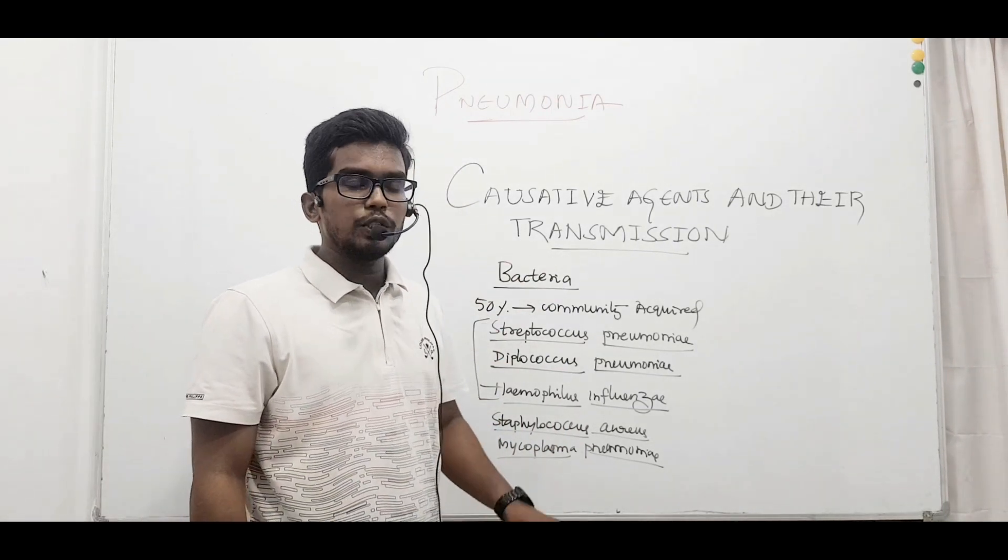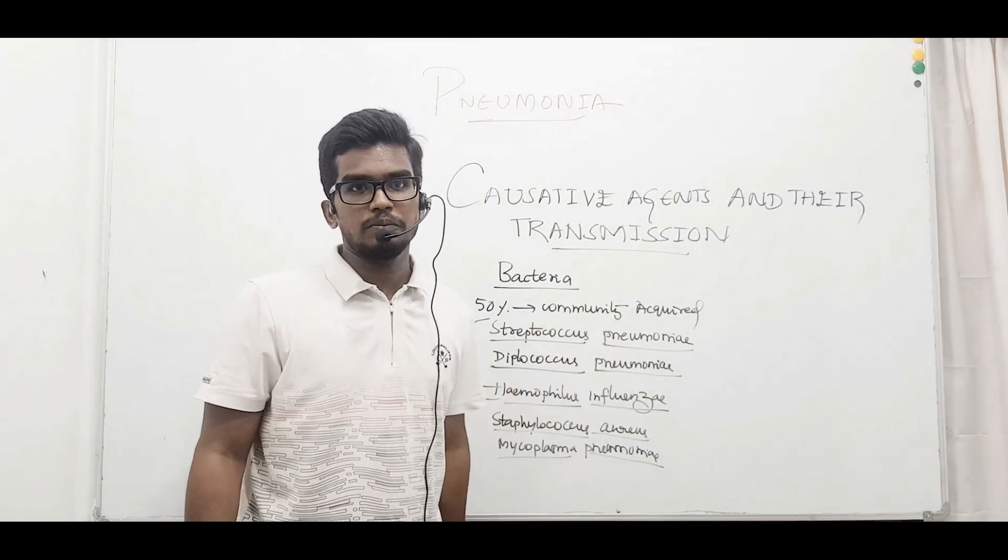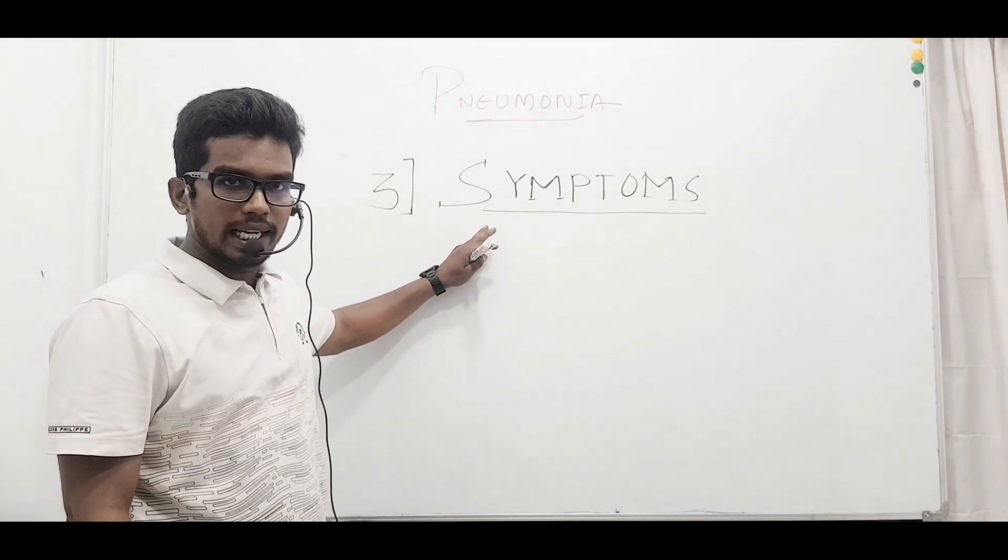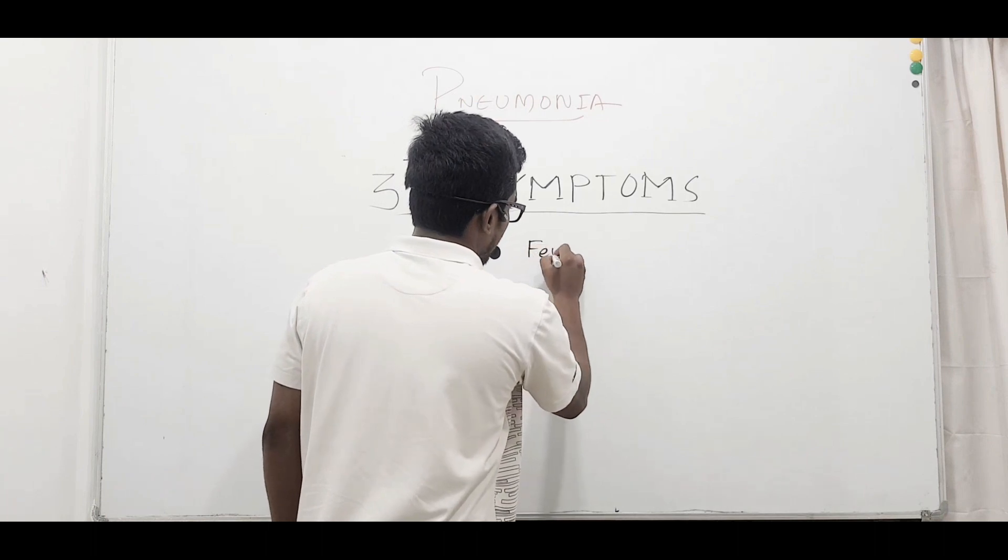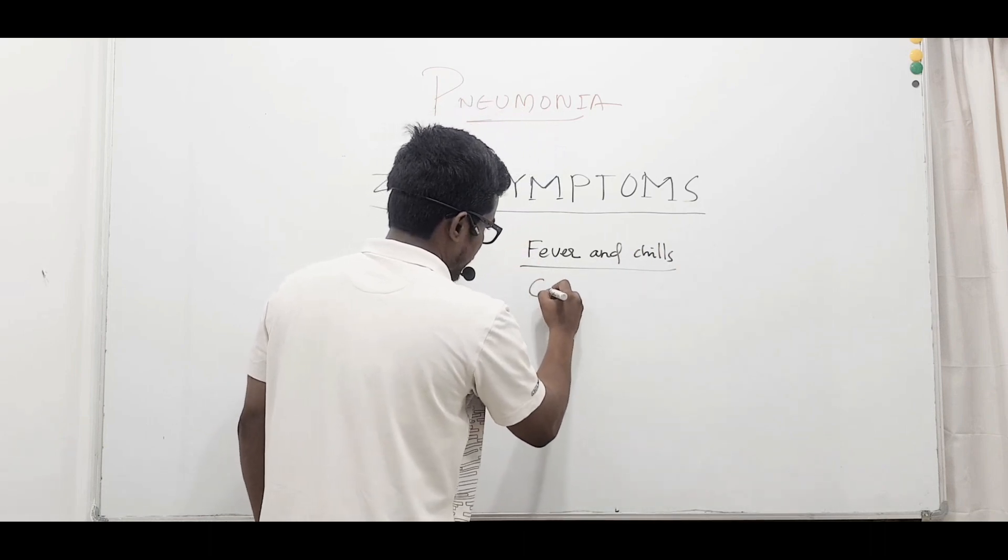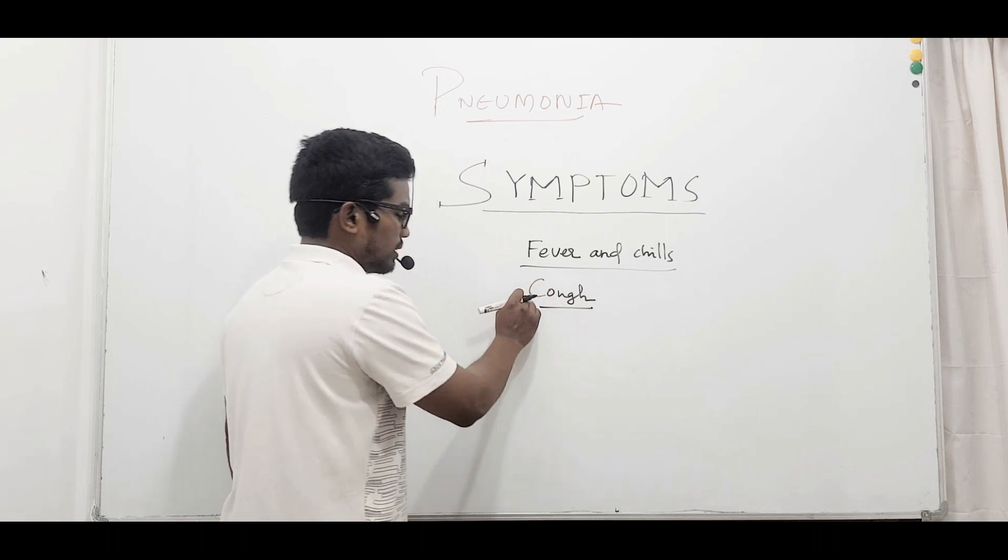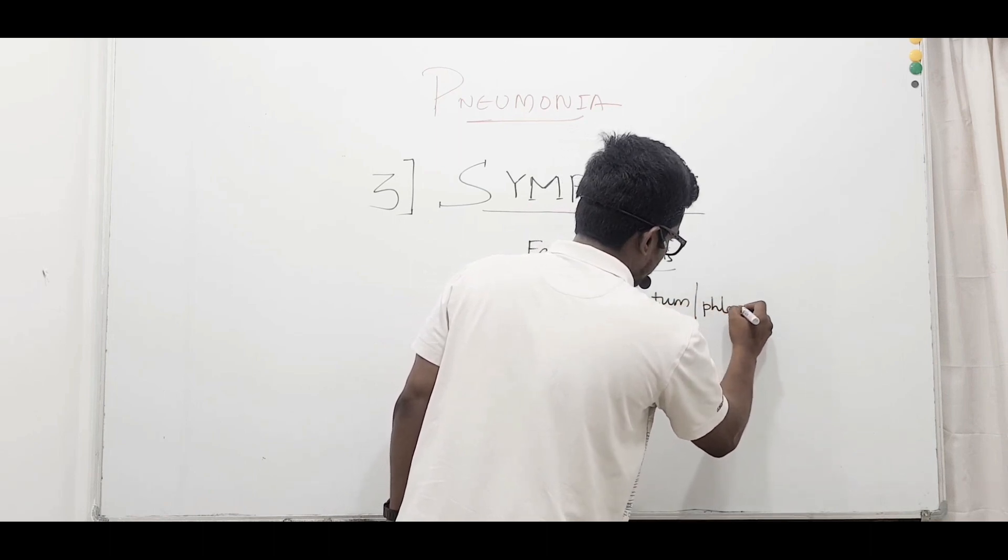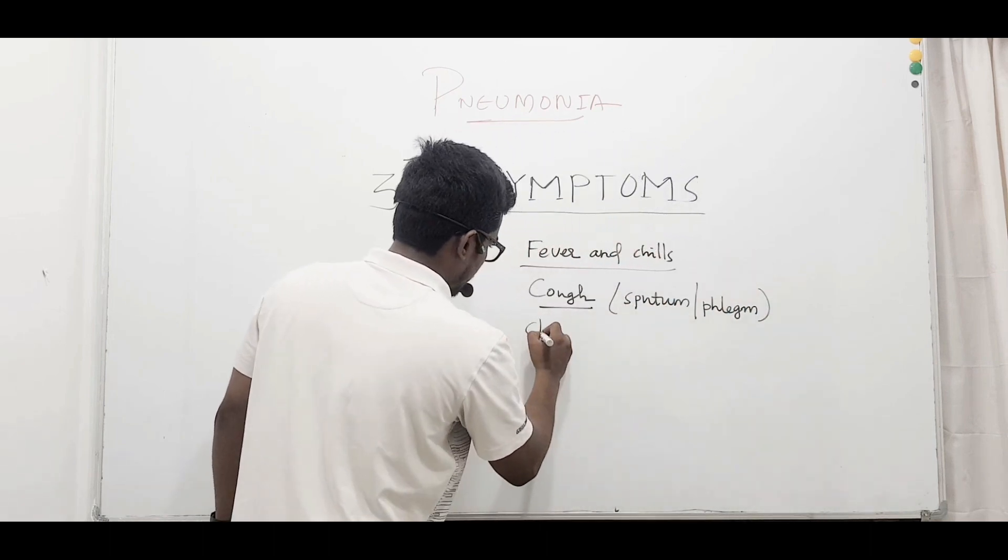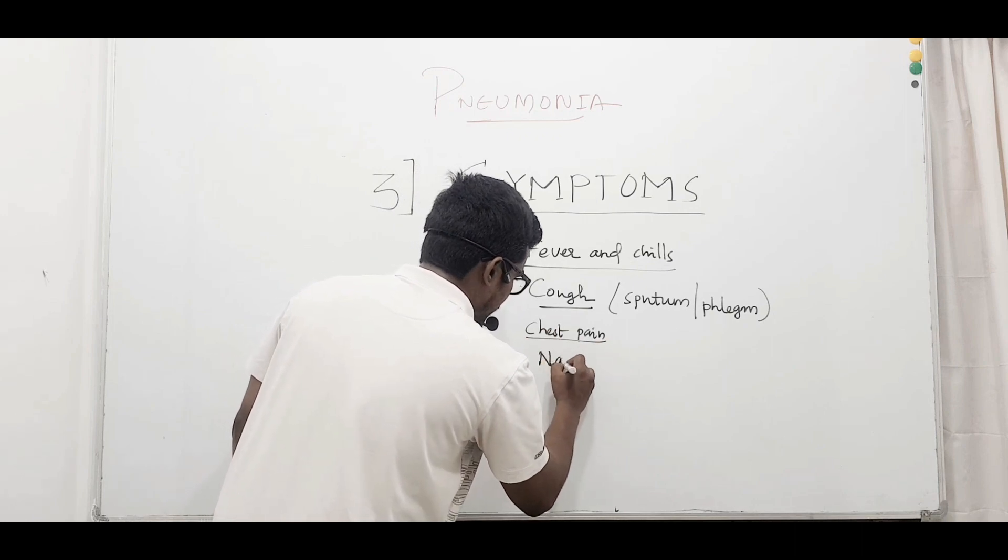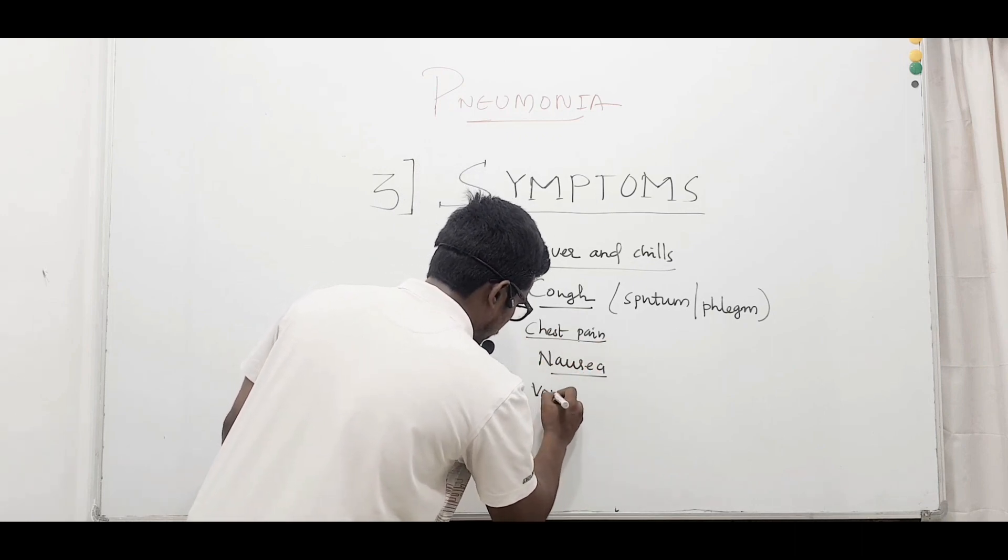The bacterial pneumonia develops very quickly and typically causes high fever and chills. Along with this, we can find cough—it is dry at first but later produces sputum or phlegm. Chest pain can also be associated with this disease.